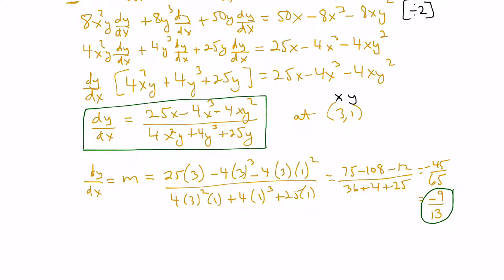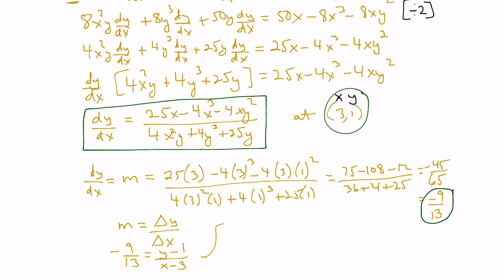So the slope is −9/13, and we have the point (3,1). Using the slope formula m = (y − y₁)/(x − x₁), we get −9/13 = (y − 1)/(x − 3). Cross-multiplying gives −9x + 27 = 13y − 13. Isolating y by adding 13 to both sides: −9x + 40 = 13y. Dividing by 13 gives y = −(9/13)x + 40/13.